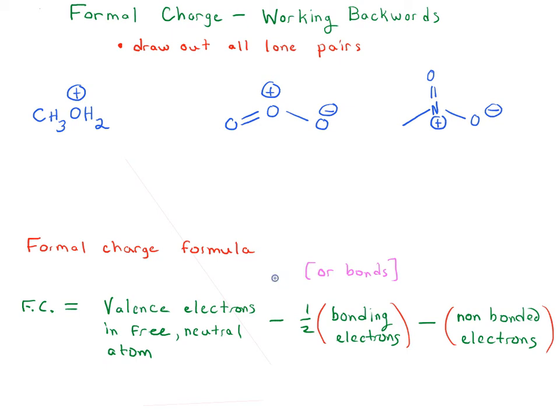Here's another set of problems where you're going to be given the formal charge of an atom, and from there you're going to have to figure out and draw out all the lone pairs of each atom. So you use the formal charge formula if you need to, to calculate how many lone pairs there are on each atom in the molecule's drawing. Press pause, work on it by yourself, and then when you're ready, press play.